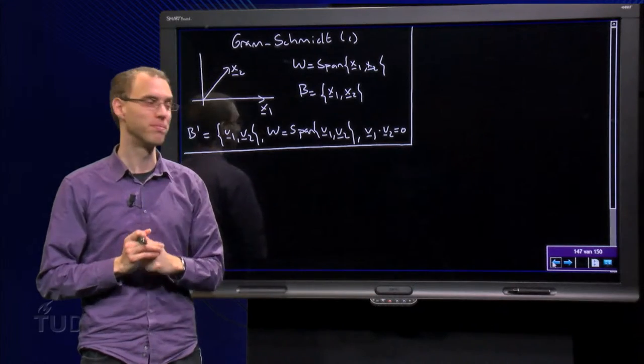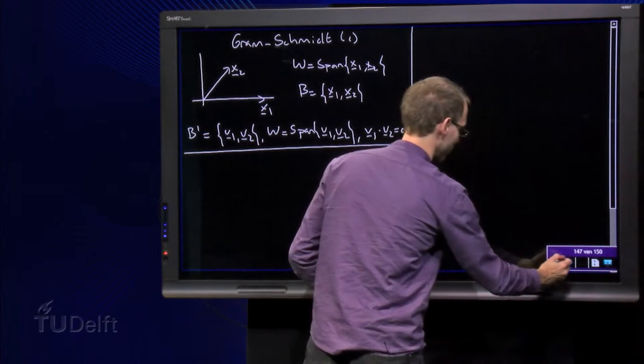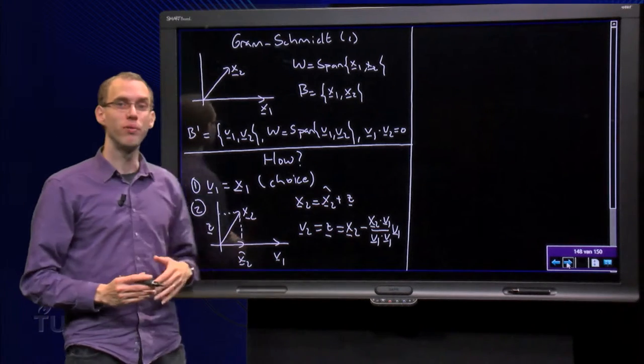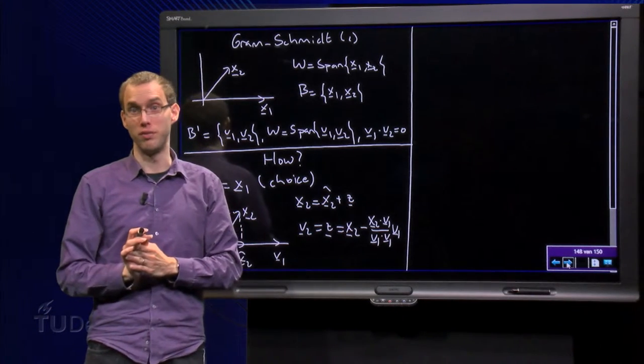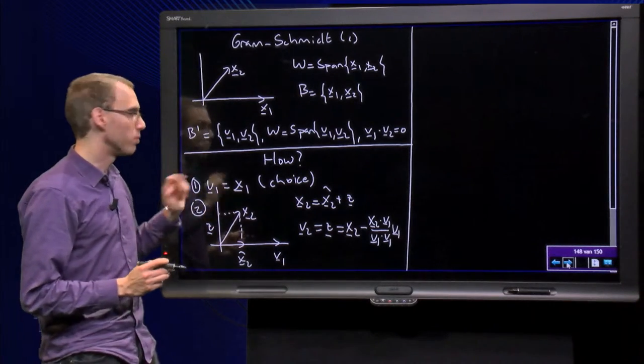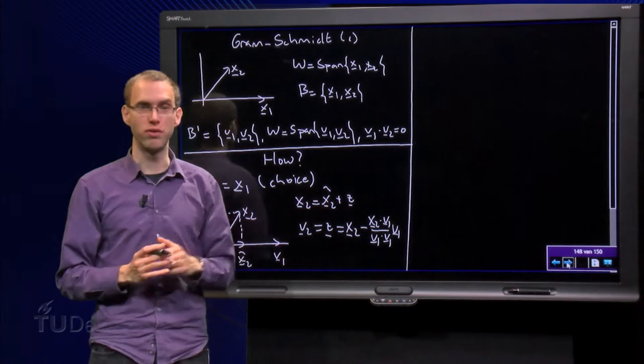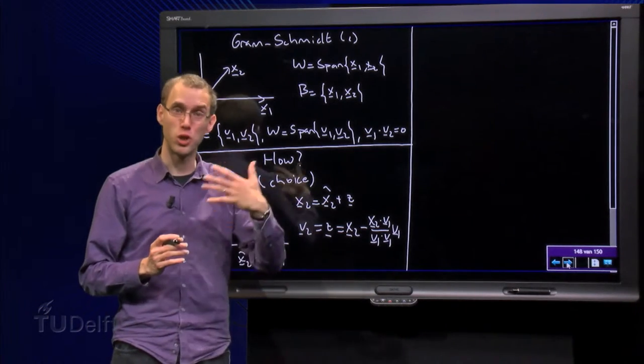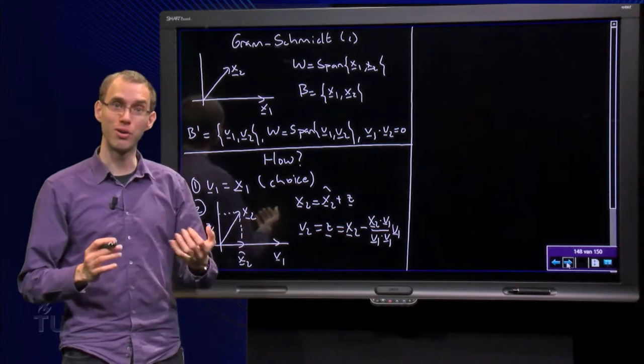How are we going to do it? First of all, we can choose the first v1. I can choose either x1 or x2, whatever I like. Put x1 here, so you can choose the first one. Then for the second one, we have to make the second one orthogonal to the first one. So, how are we going to do that?